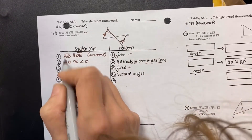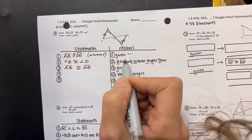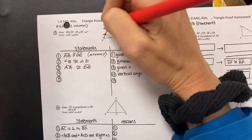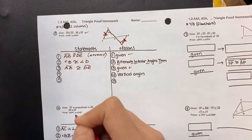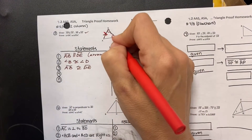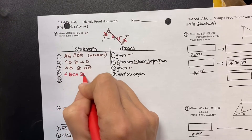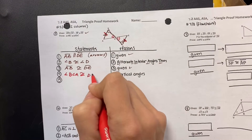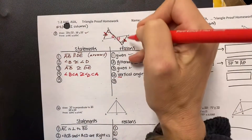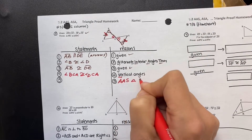Now we have another statement given: AB is congruent to DE, and that's given. They're saying this length is equal to that length. And they've got vertical angles here — angle BCA is congruent to DCA because they're vertical. So now what does my evidence spell? It looks like angle, angle, side — angle, angle, side triangle congruence.